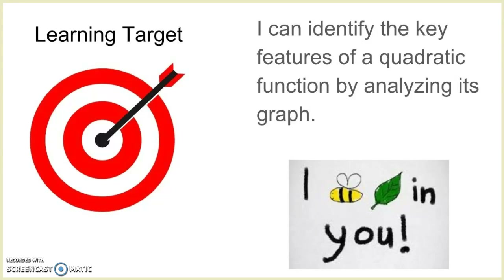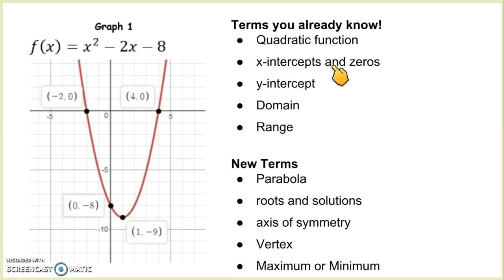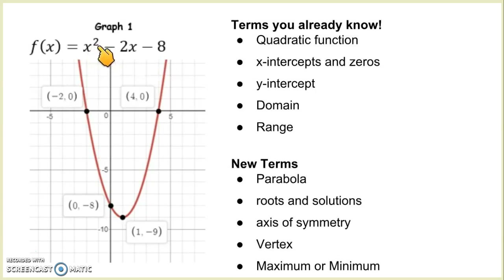That's our warm-up. Our learning target today: we're going to do some graphing in the calculator and by hand. I can identify the key features of a quadratic function by analyzing its graph. Here we have f of x equals x squared minus 2x minus 8. I made this graph in Desmos, so the points are already showing up for us. This is a quadratic function — something we talked about when we did factoring. It's quadratic because it has an x squared term and the largest exponent is a 2.